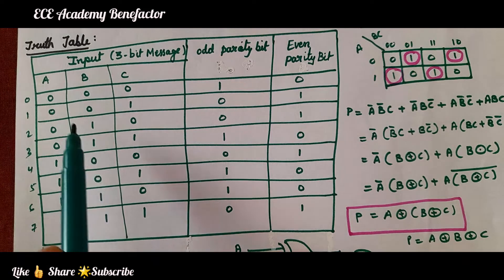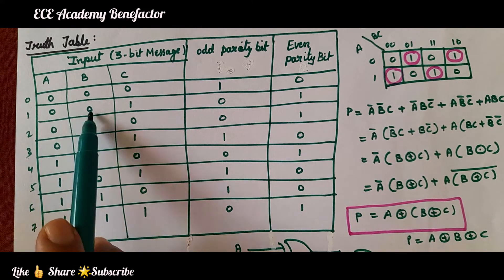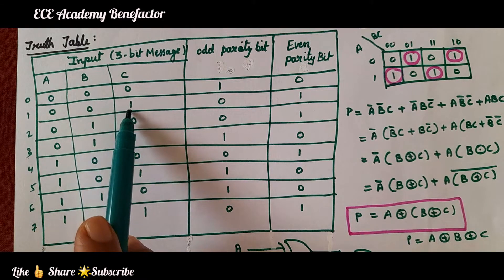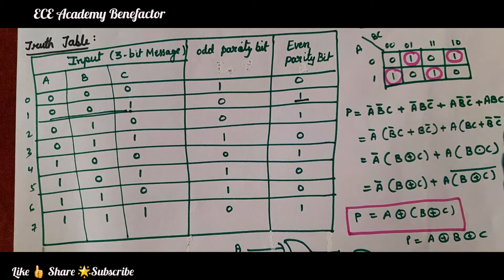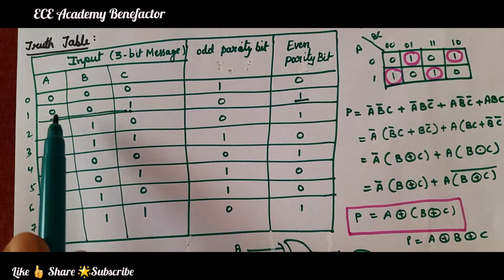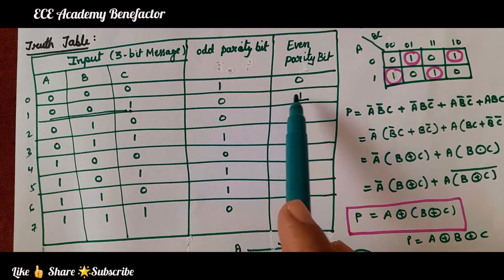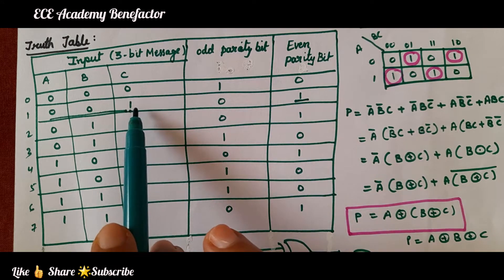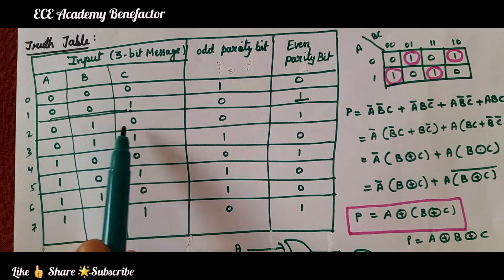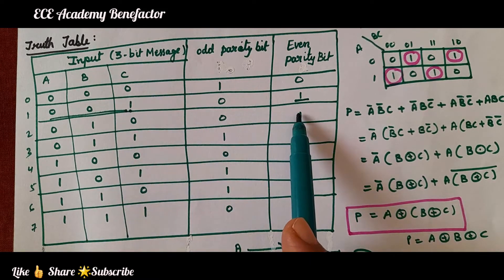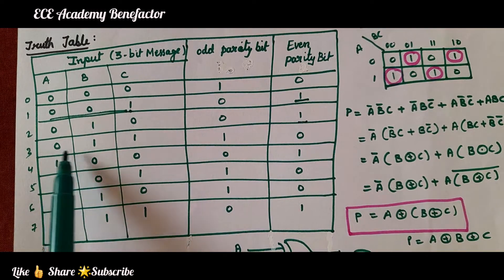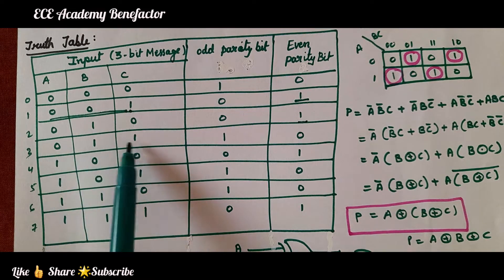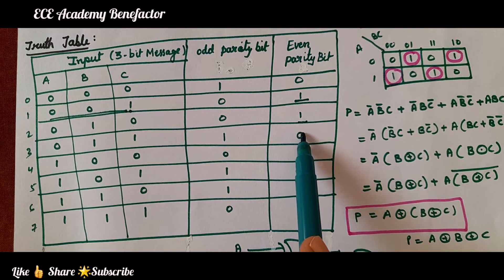For the second combination 0 0 1, the number of 1s is only 1, which is odd, and we need even parity, so we add parity bit 1 to make total 1s equal to 2. For 0 1 0, number of 1s is 1, so we add 1. For 0 1 1, there are already two 1s which is even, so we add 0. For 1 0 0, the number of 1s is odd, so to make it even we add parity bit 1.